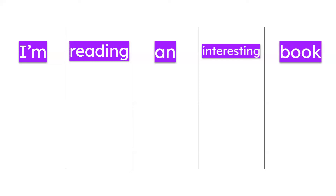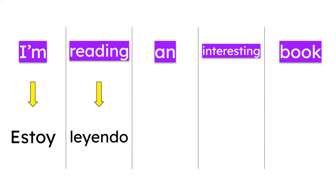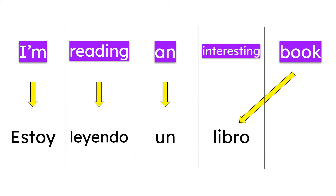So how do you say this in Spanish? The verb to read is leer. 'I'm reading' goes estoy leyendo. Then: estoy leyendo un — and remember, in Spanish adjectives go after the noun — so it's un libro interesante. The full sentence: Estoy leyendo un libro interesante.